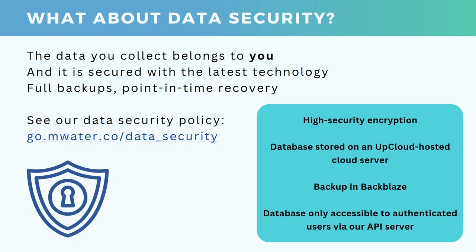You decide who gets to see it and how much of it you share, if anything. That data is secured with the latest technology based on the best cloud providers we can access. We also have full data backups and point-in-time recovery, meaning that if data has been synchronized with the server, there will be a backup of it, and if you accidentally delete data you did not mean to delete, you can get in touch with us and we can recover it. There are many facets to improving data security — high-security encryption in the transmission of data, our database stored in a modern cloud-hosted server, regular backups to Backblaze, and the database only being accessible to authenticated users securely through our API server. You can read more from our data security policy at go.mwater.co/data_security.